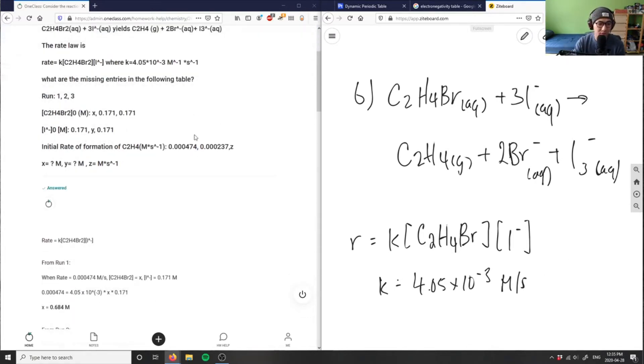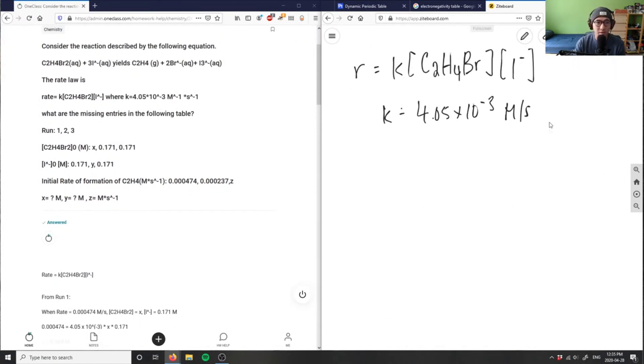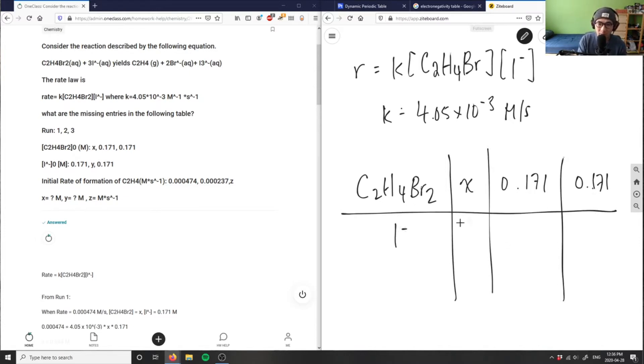So I believe this should have been a table here. So let me just try to figure out what type of table they have here. They have runs 1, 2, 3. So this here is C2H4Br2 with X, 0.171, and 0.171. This is a table like that. I minus here is 0.171, Y, and 0.171.